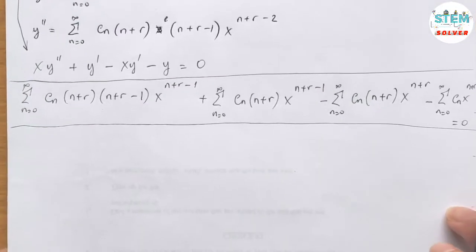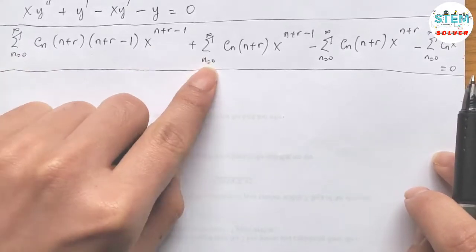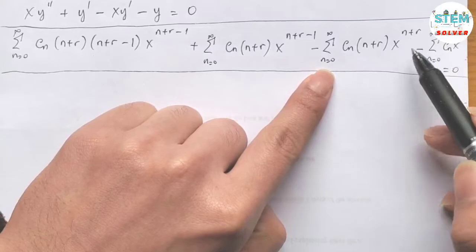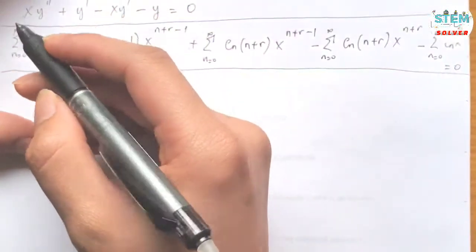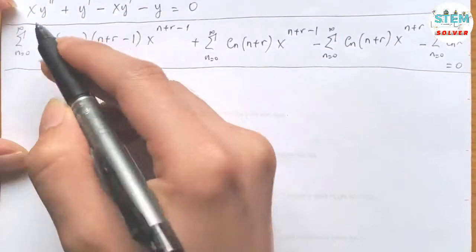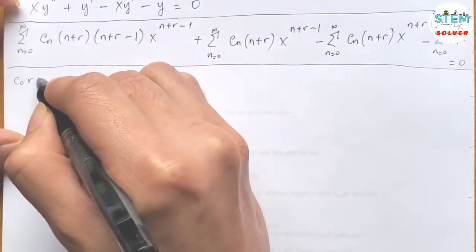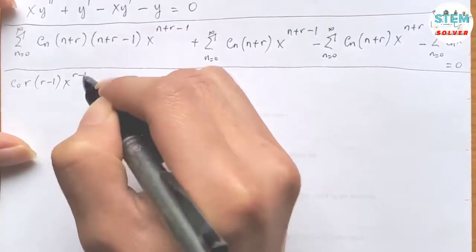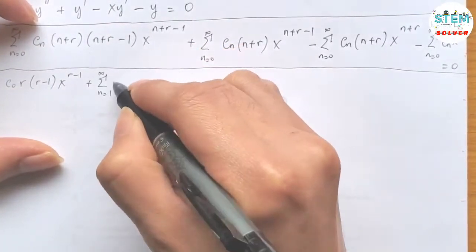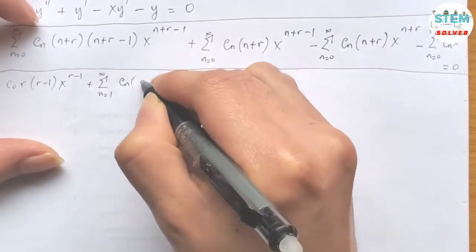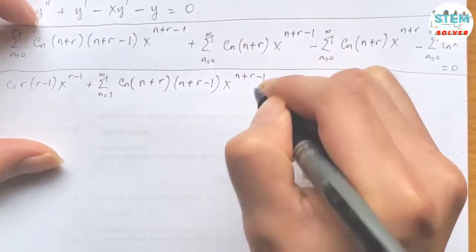Now let's look at the power when n equals 0. Plugging in 0 gives x to the r minus 1 for the first term, and x to the r for the others. So for the first series, plugging in n=0 gives c_0 · r · (r minus 1) · x to the r minus 1, plus the power series from 1 to infinity of c_n · (n+r) · (n+r−1) · x to the n+r−1.